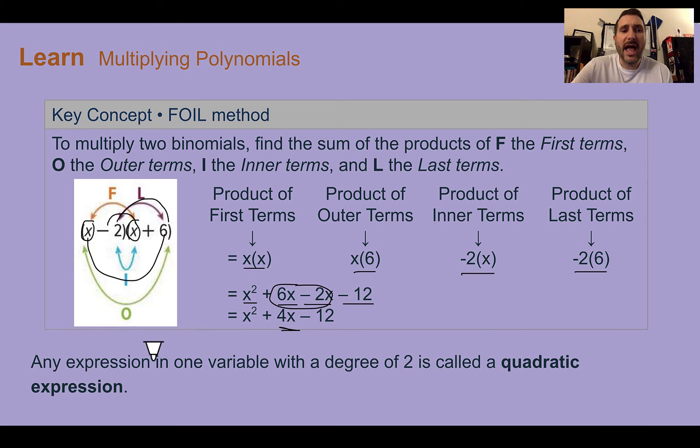And then as we learned in lesson one, any expression with one variable and a degree of 2, so we can see that degree here, is called a quadratic expression. And you are going to notice we're going to end up with a lot of quadratic expressions when we're multiplying two binomials.